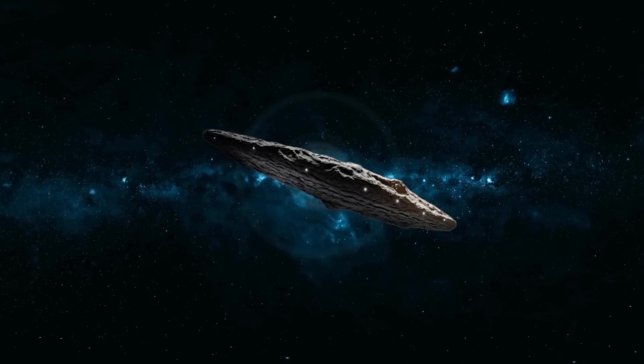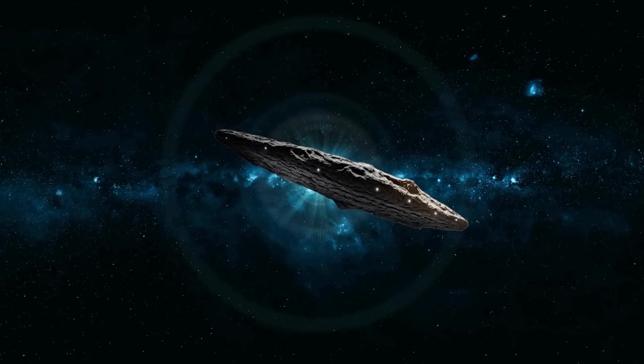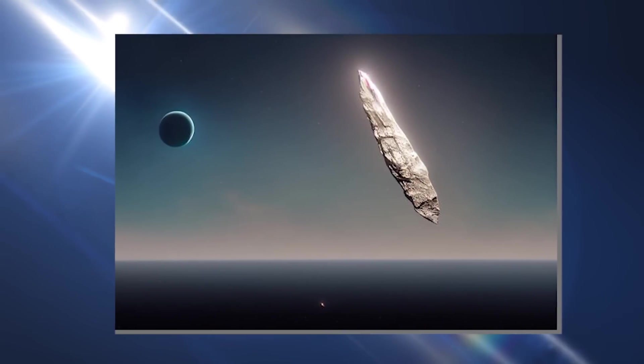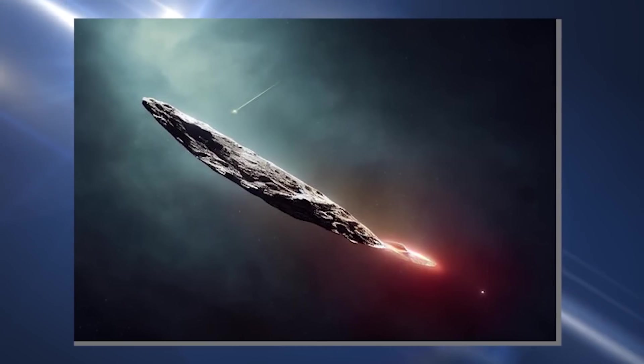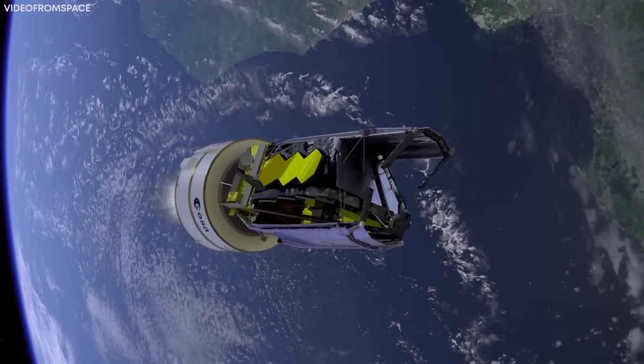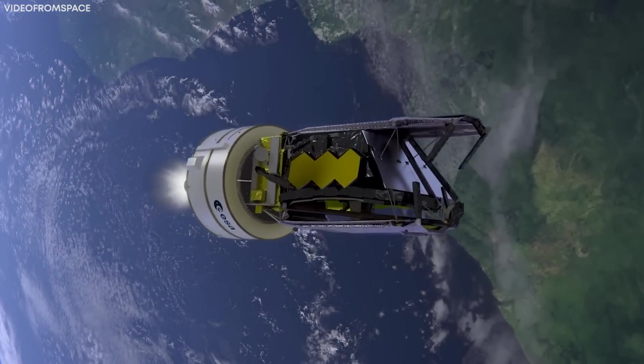However, it is also possible that the red tint of Oumuamua is due to something else entirely. For example, it has been suggested that the red tint could be caused by radiation damage from the interstellar medium.